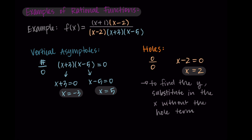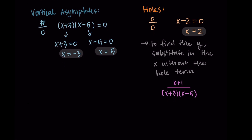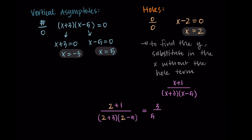I also like to find the y-value that goes with the hole in the graph. To do this, we substitute in x equals 2 without the hole term — so we remove x minus 2 from both the numerator and the denominator. We're just looking at x plus 1 over x plus 3 times x minus 5, and substituting in 2: 2 plus 1 divided by 2 plus 3 times 2 minus 5, which simplifies to 3 over 5 times negative 3, that's 3 over negative 15, which simplifies to negative 1 fifth. So the hole occurs at the point 2, negative 1 fifth.